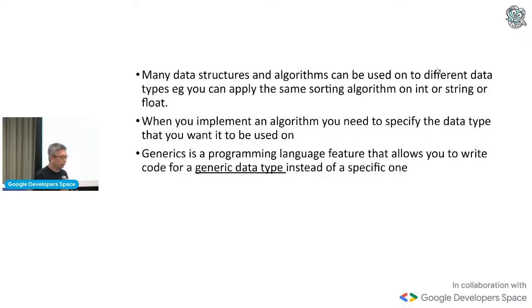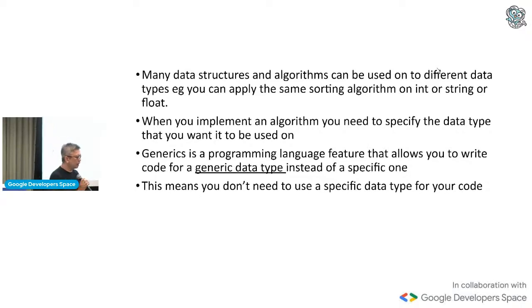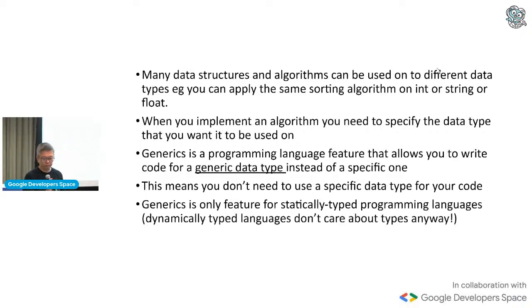Generics then is a feature in a programming language that allows you to write code for a generic data type. So what it means is you don't really need to specify the data type. So that's it really. That's what generics is. So you don't need to use a specific data type for your code and you're free to basically write code to do the stuff that you want to do without having to worry about the specifics of the data type. So that's what generic programming is. It's not unique. It's actually available in many programming languages. Of course, it's not really so applicable for dynamic programming languages, right? Because dynamic programming languages don't care about the data type. So it's really more for statically typed programming languages.